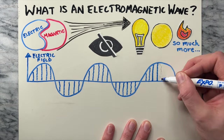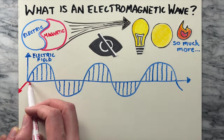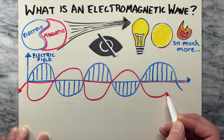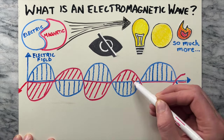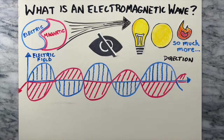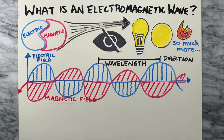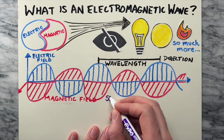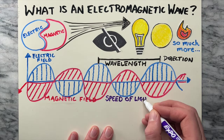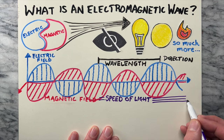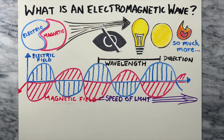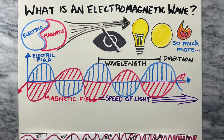The electric and magnetic parts wiggle, or oscillate, as they move, creating a wave-like motion measured in wavelengths. These waves travel at the speed of light, making them super fast messengers through space.